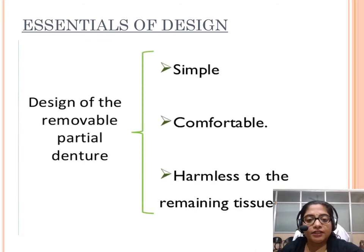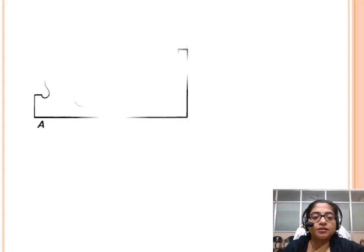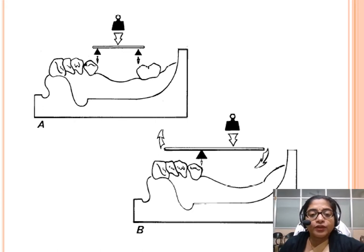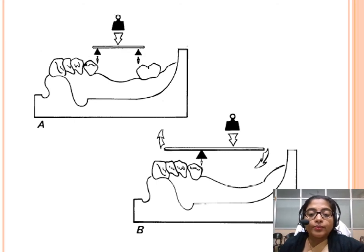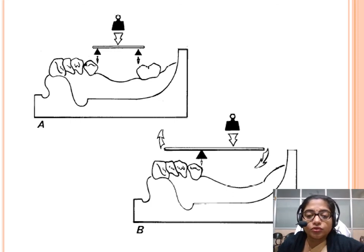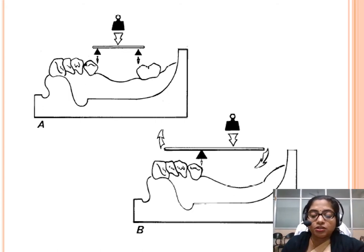The essentials of design are that the removable partial denture is to be simple, comfortable, and harmless to the remaining tissues. Then come the differences in support. There are two types of situations: one is a tooth-supported edentulous area — Kennedy's Class 3 — where teeth on both sides protect the partial denture from torsional forces. But when the terminal abutment is lost, the denture is converted into Class 2 or Class 1, a distal extension partial denture, where torsional and horizontal forces are much more prominent due to lack of posterior abutment. Tooth-supported and tooth-and-tissue-supported partial dentures are therefore two different concepts.